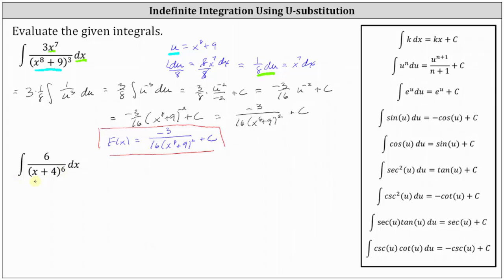For our second example, we have the integral of six divided by the sixth power of x plus four dx. If u is a function of x, it seems clear u would need to be x plus four. So if u is equal to x plus four, the denominator is going to be u to the power of six, and we're left with six dx. Next, we determine differential u. Differential u is equal to the derivative of x plus four with respect to x times dx, which gives us one dx or just dx. So we can simply replace dx with du, and factoring out the six gives us six times the integral of one divided by u to the sixth du.